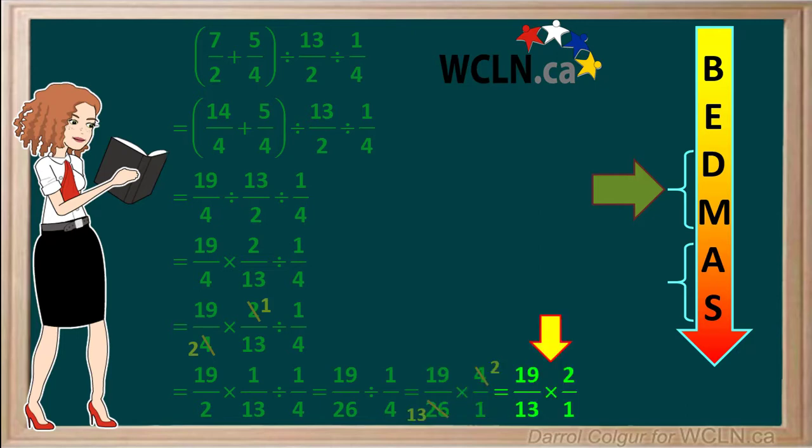So we are left with the multiplication 19 thirteenths times 2 over 1. 19 times 2 is 38, and 13 times 1 is 13. So the product of these is 38 over 13.